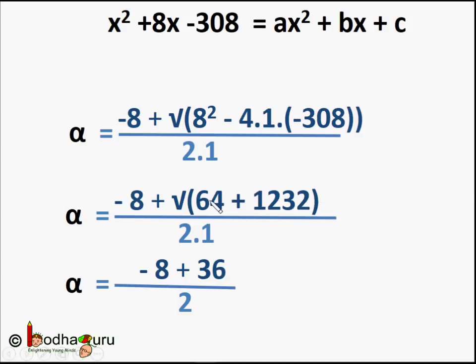64 + 1232 = 1296 and √1296 = 36. So alpha = (-8 + 36) / 2.